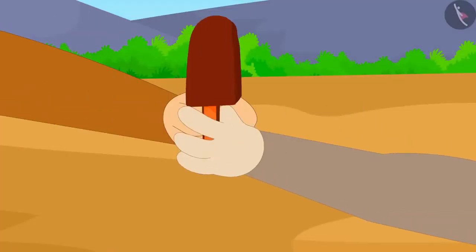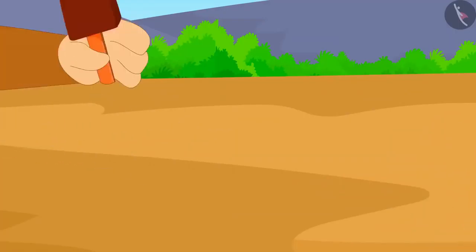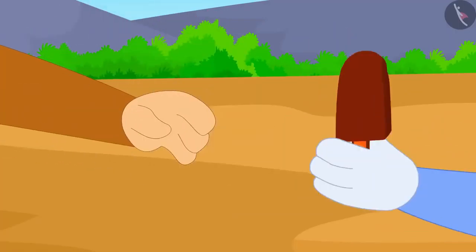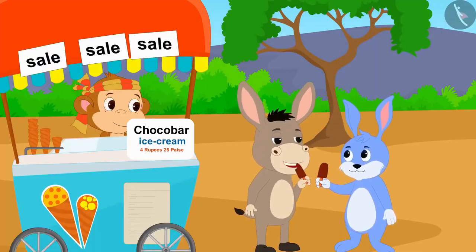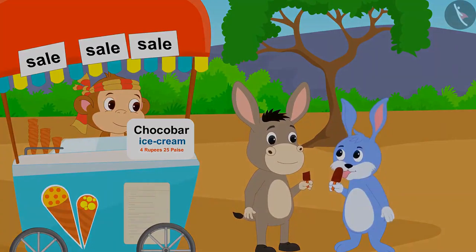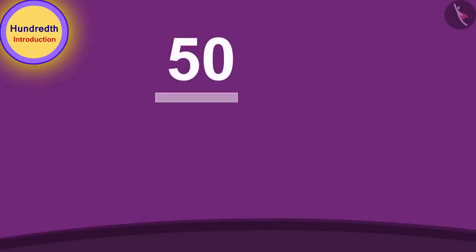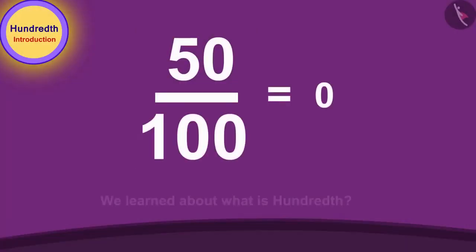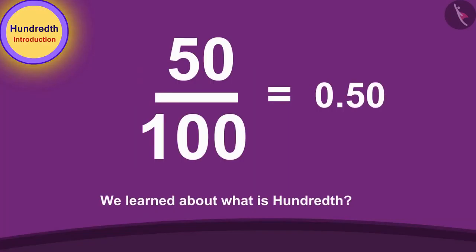Bunny and Bholla bought one Chocobar ice cream each from Babban and happily returned home eating ice cream. Children, in this video, we learned about what is hundredth. In the next video, we will learn more about it through some interesting examples.